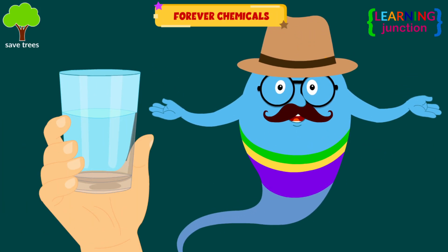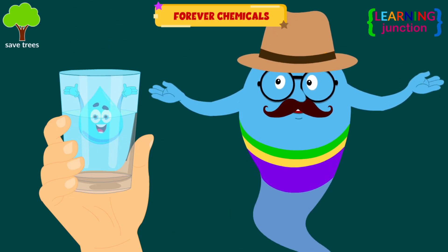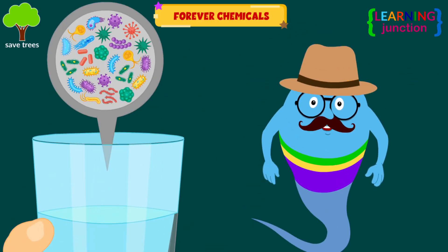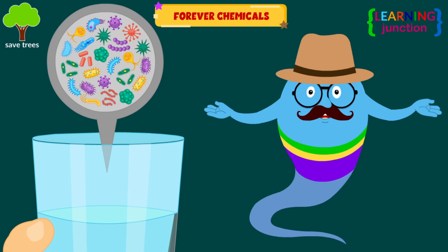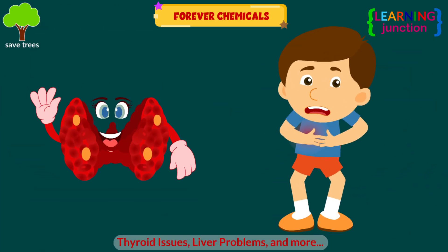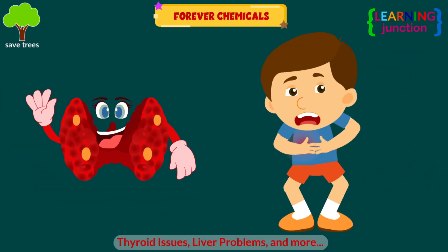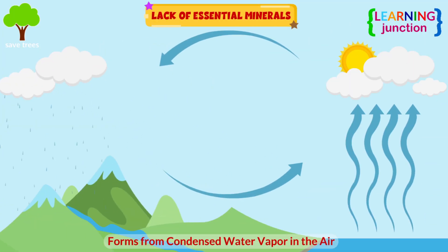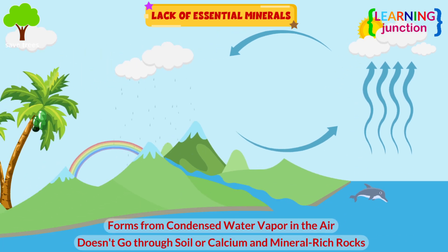Forever chemicals: rainwater can contain PFAS, or forever chemicals, which are linked to various health risks including thyroid issues, liver problems, and more. Additionally, rainwater lacks essential minerals — it forms from condensed water vapor in the air and doesn't naturally pass through soil or calcium and mineral-rich rocks.